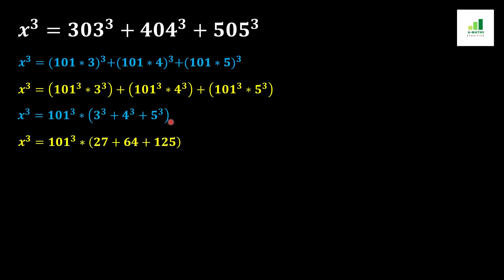In the next step, x³ = 101³ remains the same, and we open the cube values: 3³ = 27, 4³ = 64, and 5³ = 125.